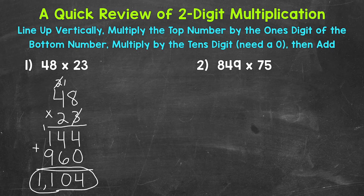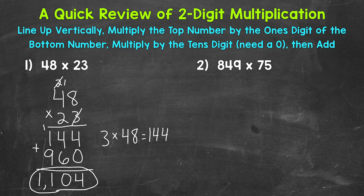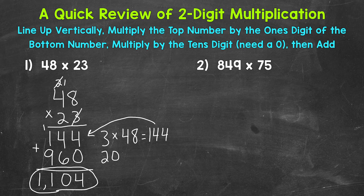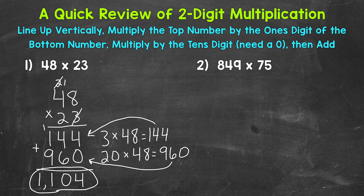Before moving on, I want to mention something to help us understand what we're doing within this problem. We started by multiplying the top number by the ones digit of the bottom number: three times 48, which equals 144. Then we moved to the tens digit and multiplied that by 48 — that digit is a two, but it has a value of 20 because it's in the tens place, so we did 20 times 48, which equals 960. Then we add those together to get the final product.